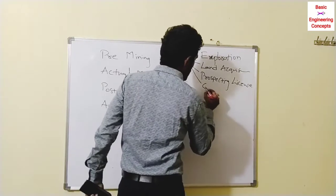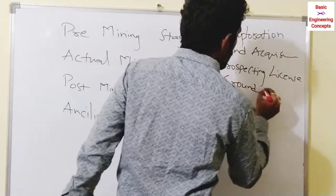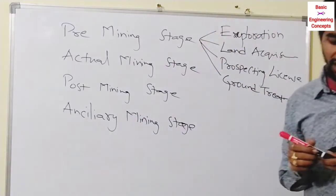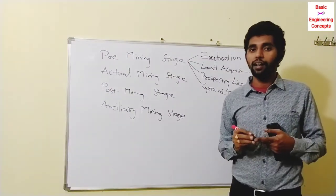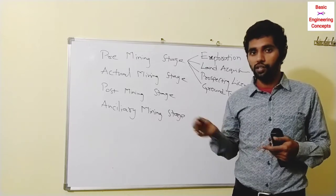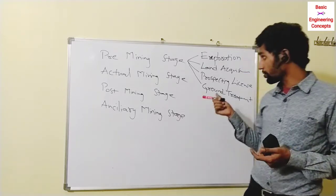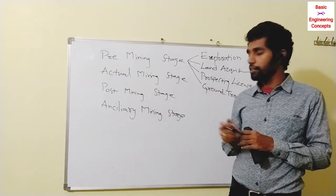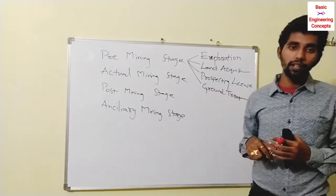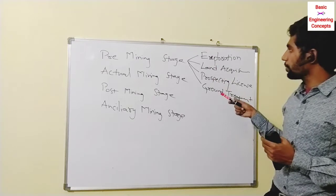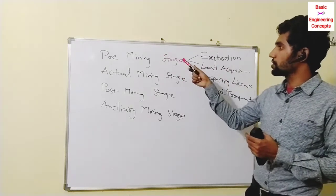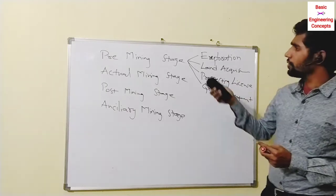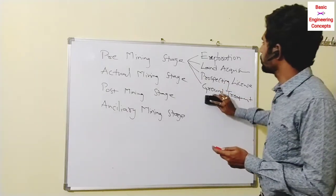If we get a license, we will start the ground treatment. Ground treatment involves land preparation — we will not have barren land. These are all the basic steps in pre-mining stages. Now let's discuss the actual mining stages.